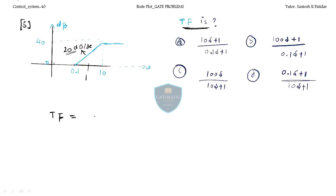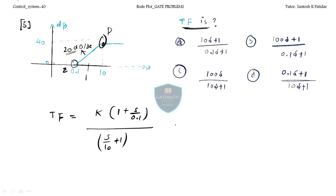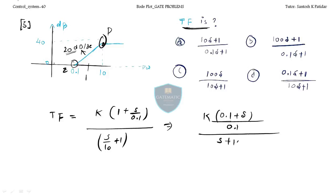At 0.1, you are getting a positive slope, which means there is a zero. K will always come. Then you get a flat region at frequency 10, meaning there is a pole at 10. Writing in standard format: K times (s + 0.1) divided by (s + 10). Rearranging: 100K times (s/10 + 0.01) divided by (s + 10), giving 100K(s + 0.1)/(s + 10).